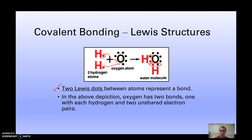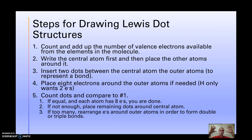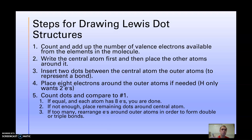Pause the video and write these down. Okay, so our first rule: we have five steps to drawing Lewis dot structures. Step one is to count up the total number of valence electrons for the whole molecule. If you have four different atoms, look at your periodic table, count up the valence electrons for each one, and that's your total.